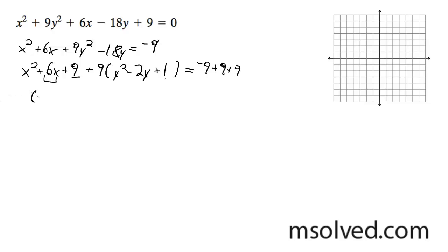So then I have x plus 3 squared plus 9 times y minus 1 squared is equal to 9. Divide by 9, x plus 3 squared divided by 9 plus y minus 1 squared is equal to 1.